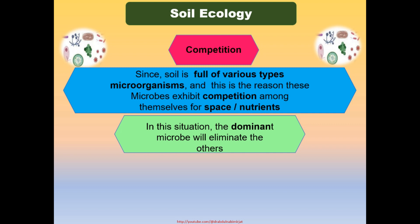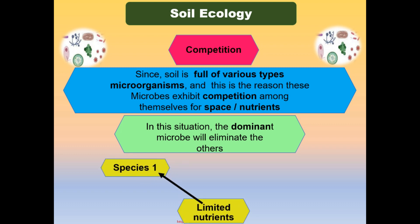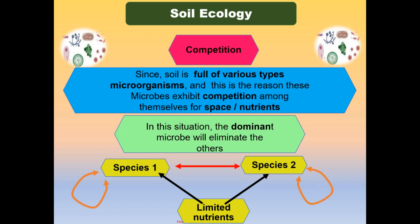An example of competition for limited nutrients involves interspecific and intraspecific competition. As shown in the figure, species 1 will compete with species 2, which is called interspecific competition. When nutrients become more limited, members of the same species will compete with each other — this is called intraspecific competition.